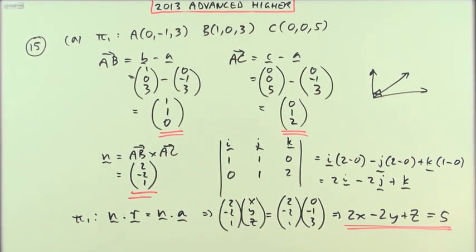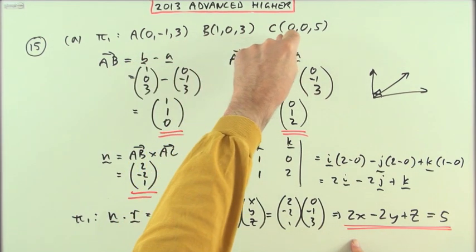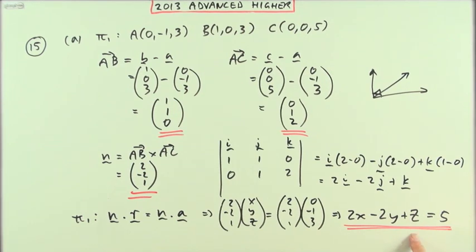So there it is—that would be the equation of the plane containing these three points. You can always check that quickly just by putting these three numbers in and checking that each time it comes to five.